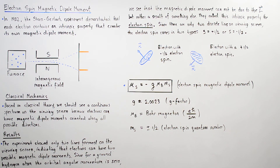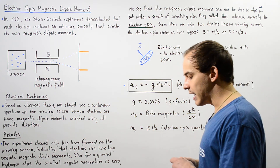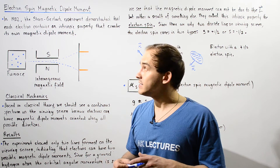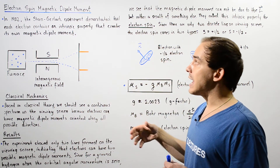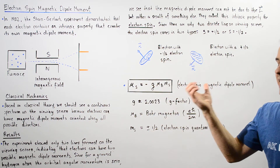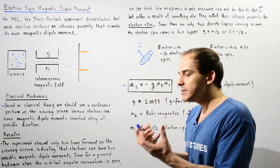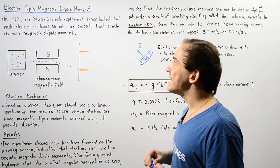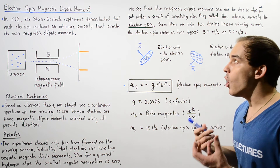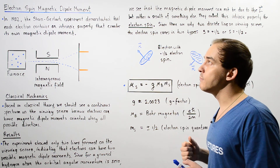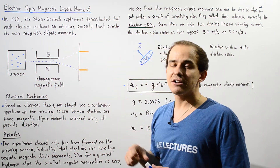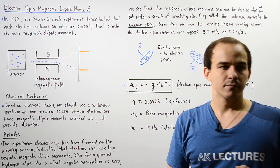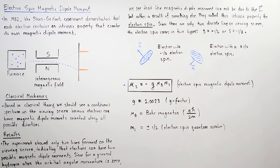This is the equation that gives us the electron spin magnetic dipole moment of our electron. The Stern-Gerlach experiment conducted in 1922 demonstrated the existence of not only the magnetic dipole moment but specifically the magnetic dipole moment due to the electron spin. Thank you.